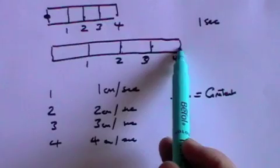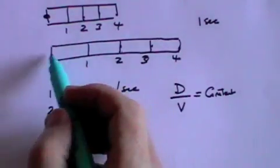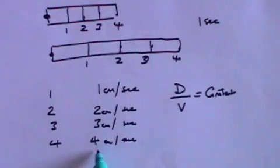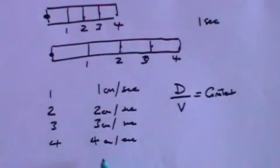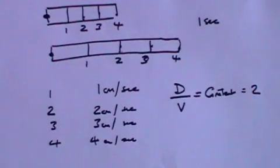The distance of point four is now eight centimeters away from the fixed point, and its velocity was four centimeters per second. And so the distance divided by velocity is two.